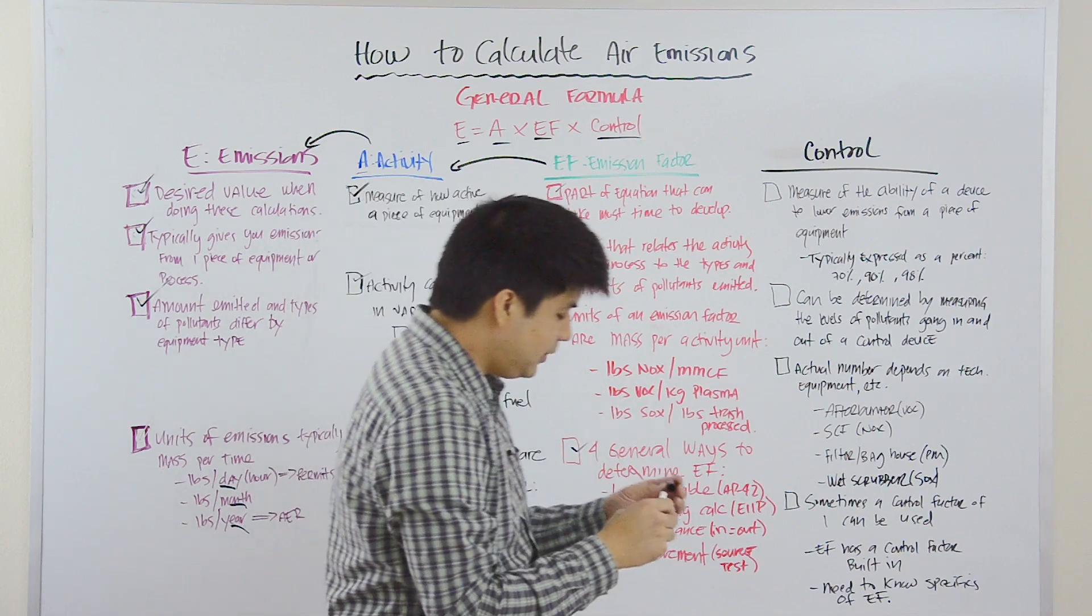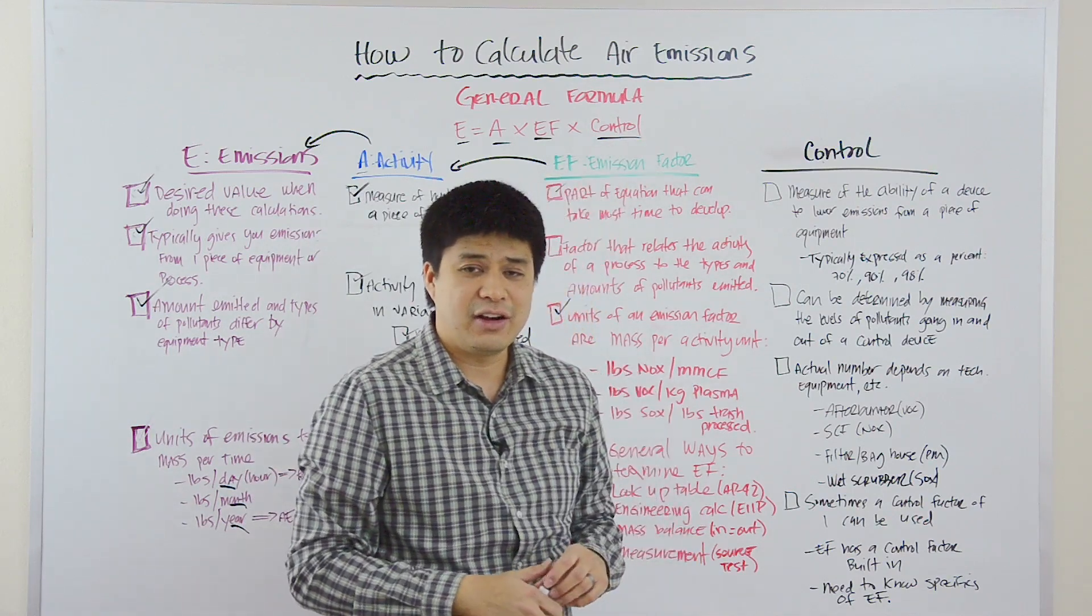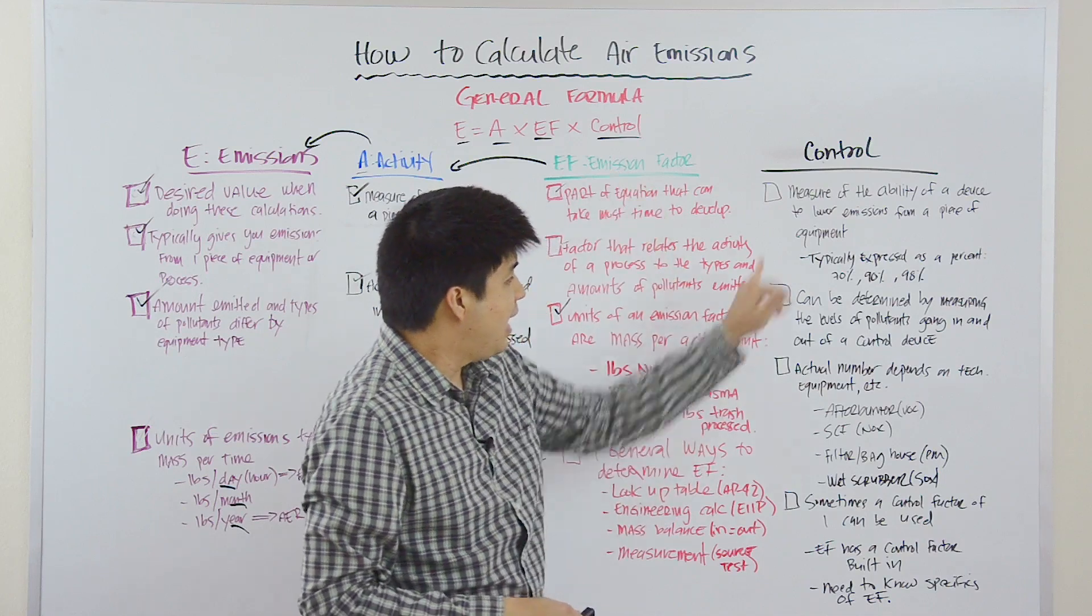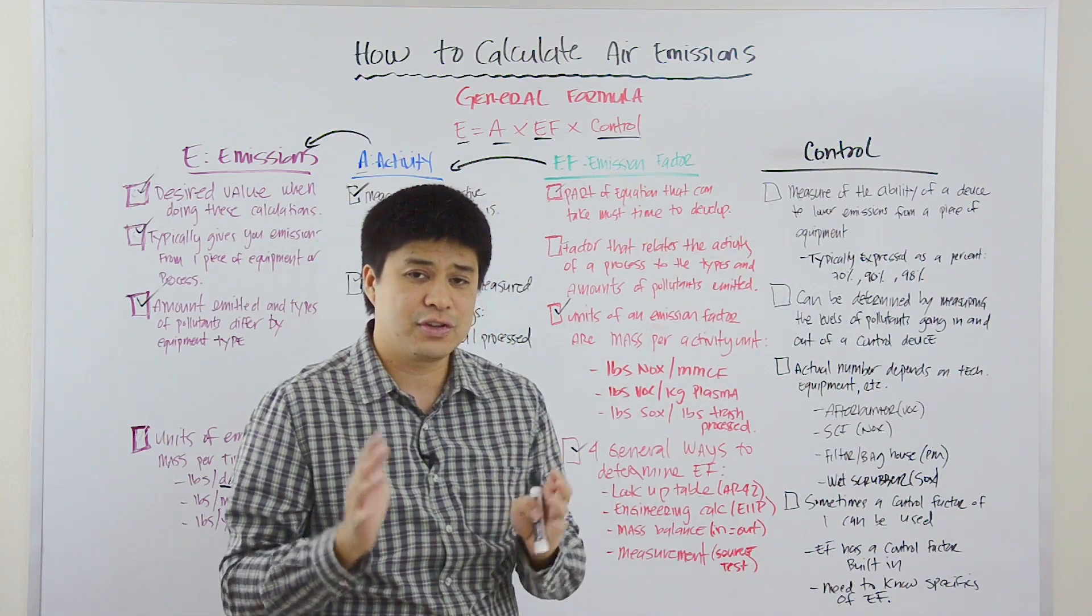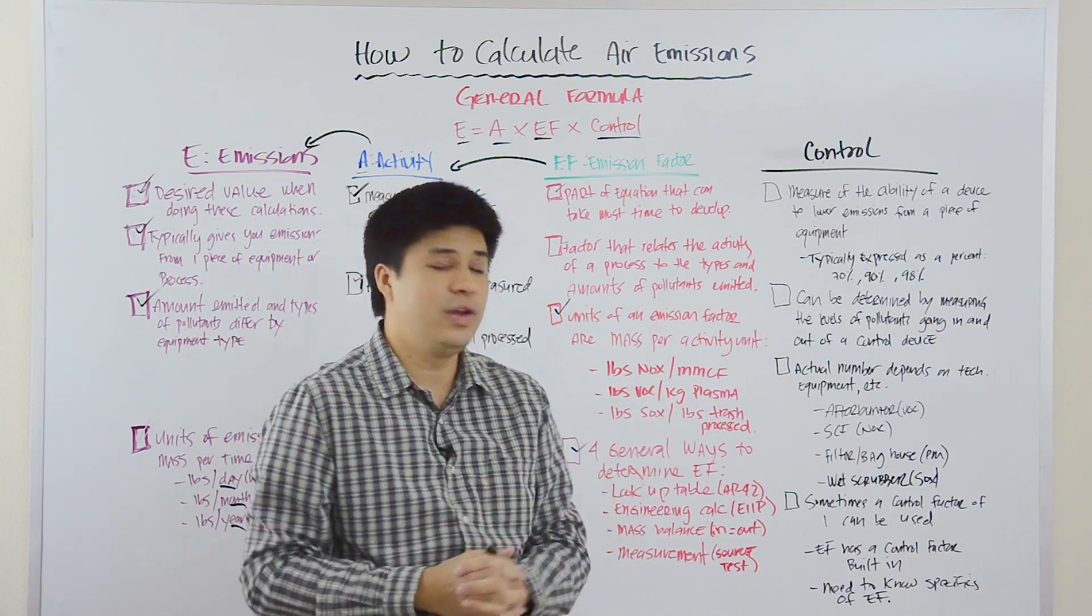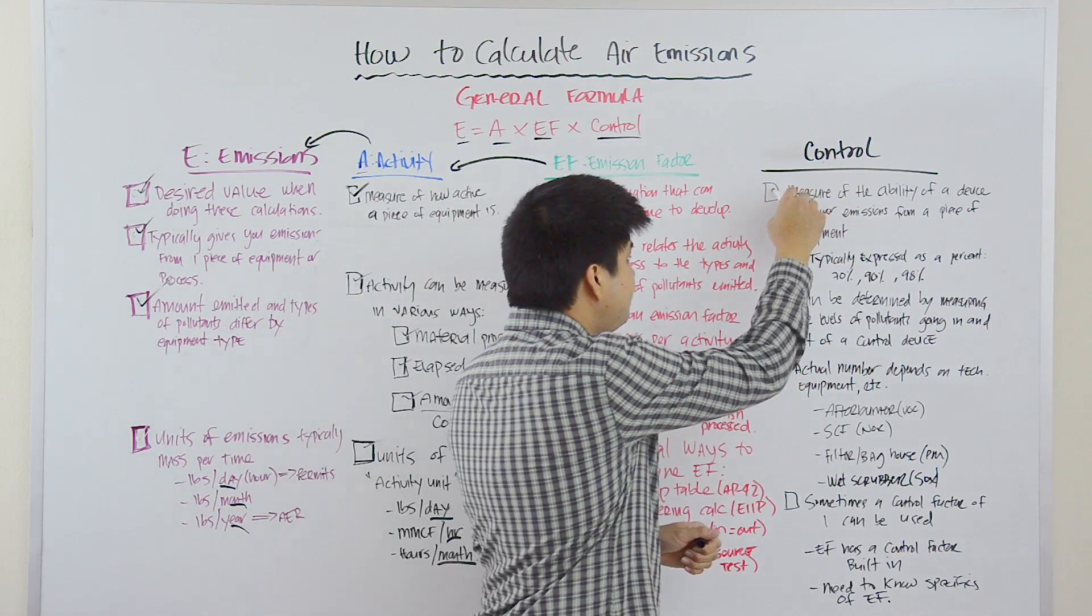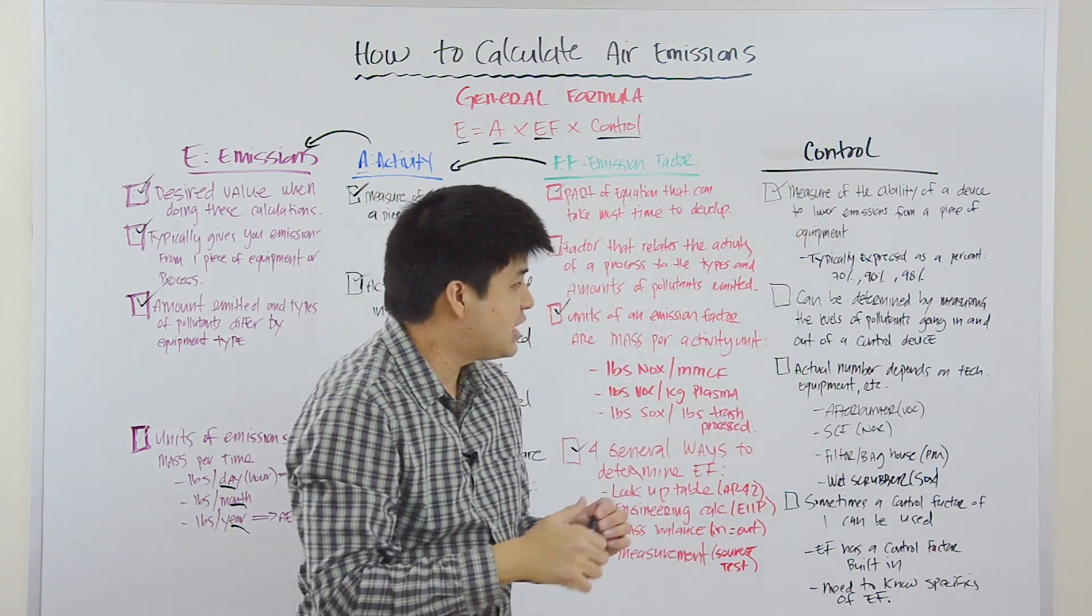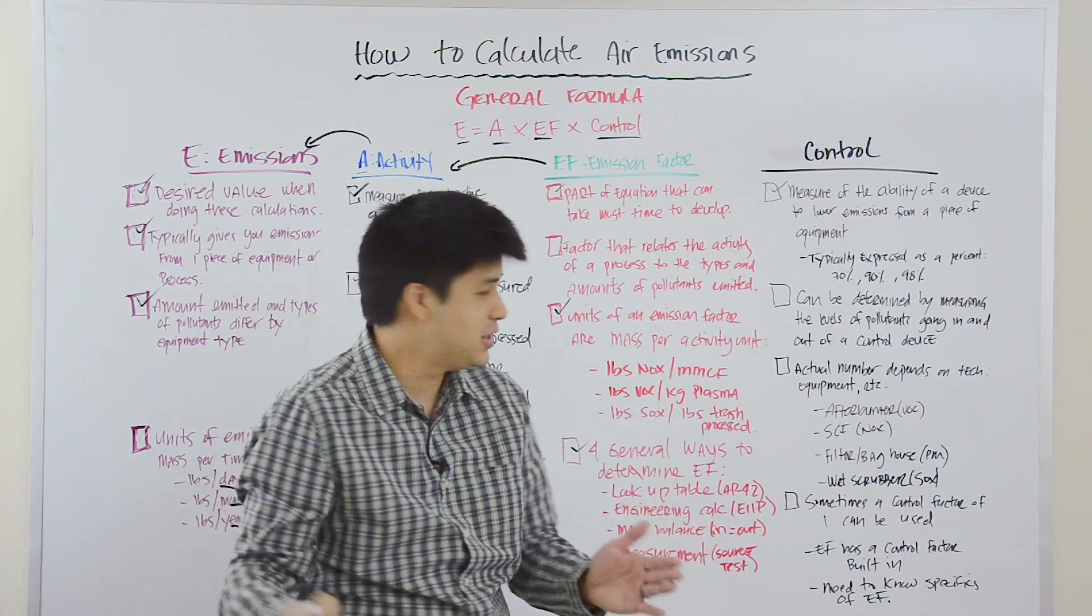The third component here in our calculation is control. And a control is simply the ability of a device to alter or lower or control the emissions from a piece of equipment. These values are typically expressed as a percent, 70 percent, 90 percent, 98 percent, 99.9 percent.